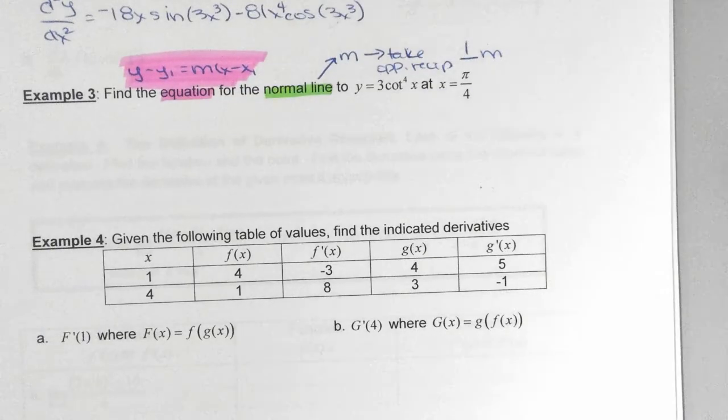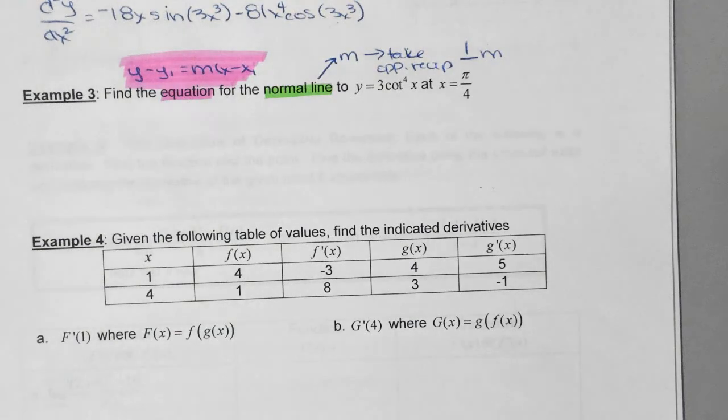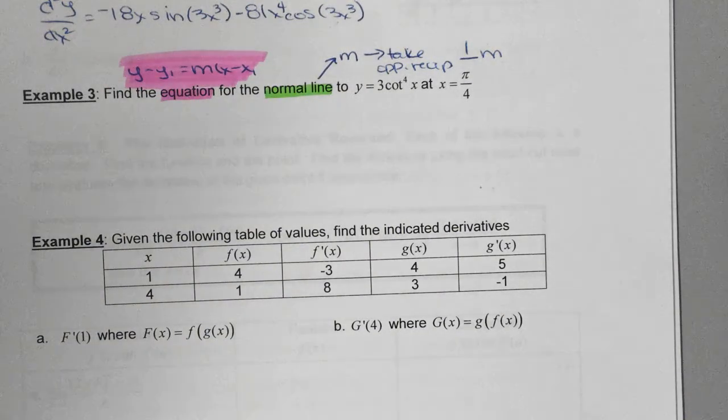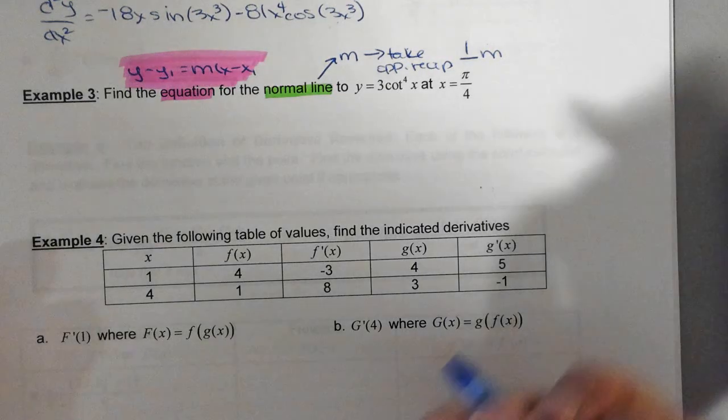Here it says find the equation for the normal line. And we are given the function, and we are given the value. So, if we have point slope, I need a point. Do I have a point? Y of half, right? So, how do I find the other half? Put the x value in. We are specific, right? What are we avoiding? It. Awesome.